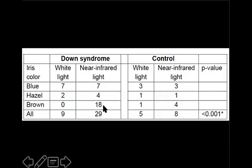When we tabulated our findings, we found that those with blue-colored irides had as many Brushfield spots seen in infrared light as with white light. With hazel eyes, we saw twice as many patients have Brushfield spots than if we used white light. And in brown-eyed patients, we never saw the Brushfield spots with white light, but in 18 patients we did with near-infrared light.